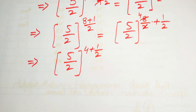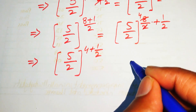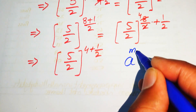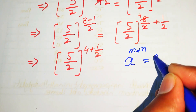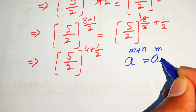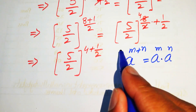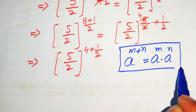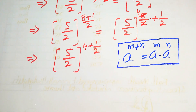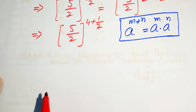Now we use another exponential law: if we have a to the power of m plus n, it equals a to the power of m multiplied by a to the power of n. We apply this law here to break this exponent.